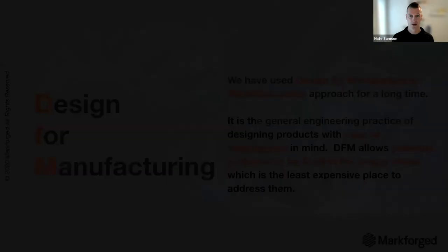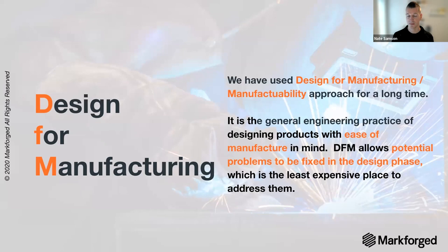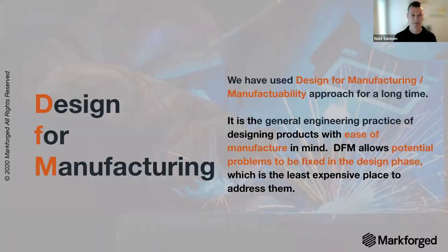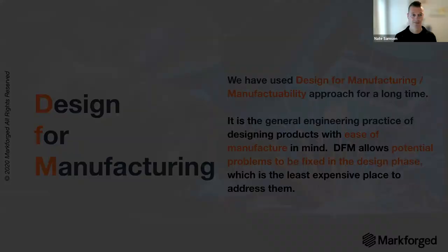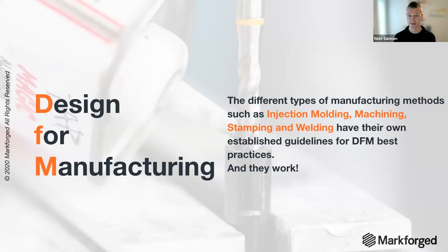Design for manufacturing is a broad term that's been used for a long time — designing something with the intent of manufacturing with a certain process, something that can be produced easily on the manufacturing floor with the equipment available. Different methods include injection molding, machining, stamping, and welding. These processes have been around for a long time, and in industry, people have been designing for those processes specifically — and they work very well.